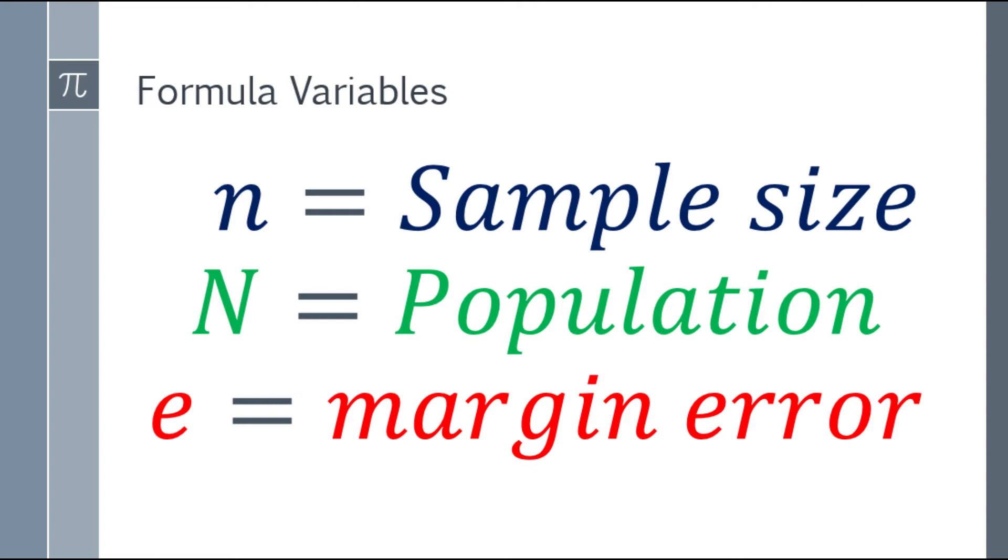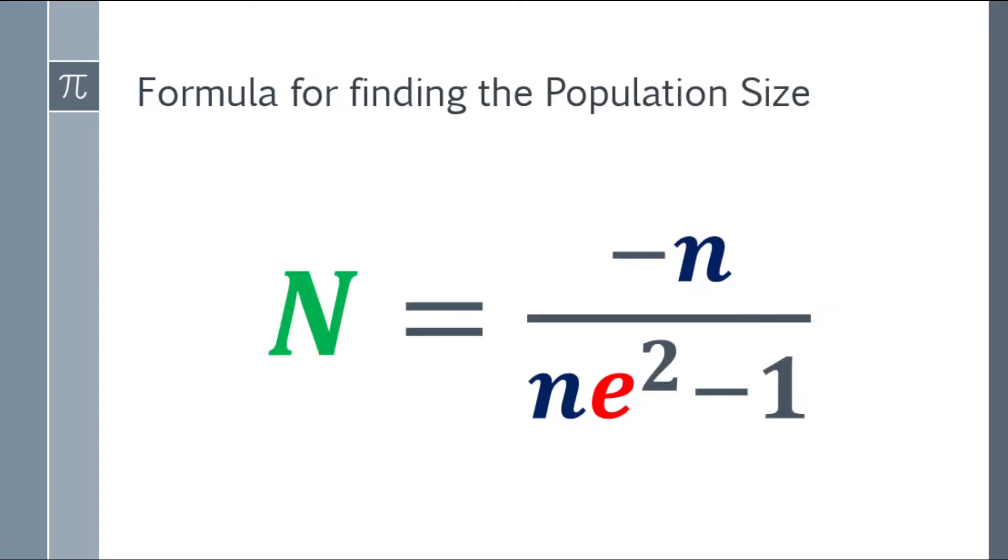What's the formula for finding the population size? We have capital N equals negative small letter n, over the denominator small letter n times e squared minus 1.